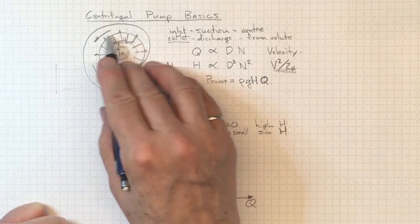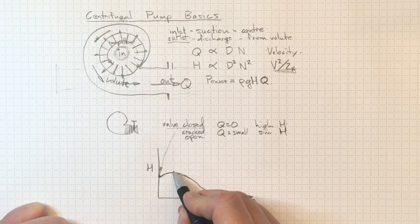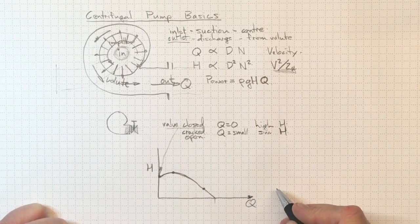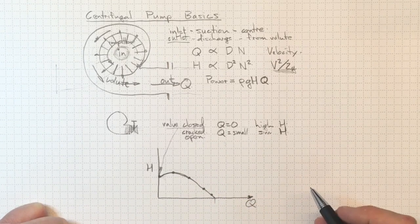So anytime we're operating this pump, we'll wind up being somewhere along this curve. We could have a high head and a relatively low flow, or a high flow and a relatively low head. But we'll be somewhere at one of these data points along this curve.